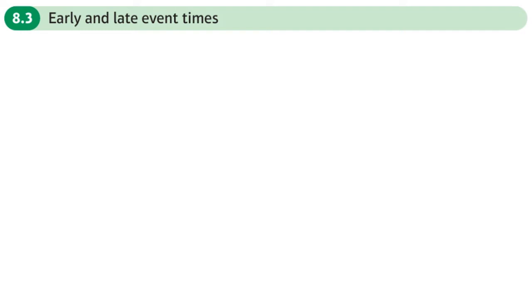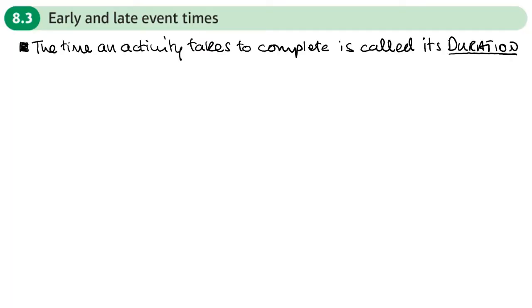This is the third section of chapter 8 on critical path analysis, and this section is about early and late event times.